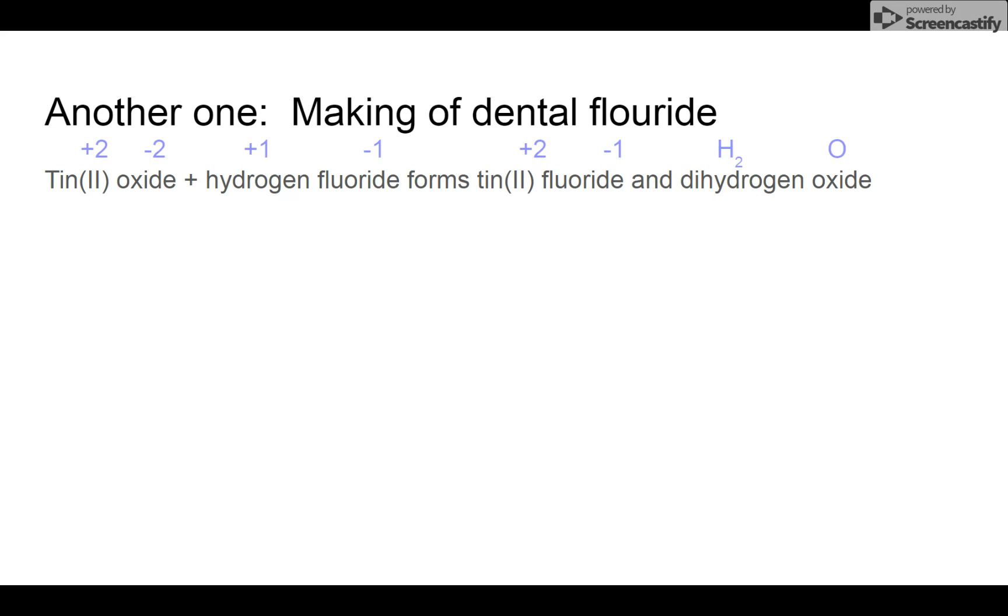Step one, find your valences. Tin 2 is telling you it's plus two. You look up oxygen, you look up hydrogen, you look up fluorine, and you don't have to look them up anymore because whatever's on the left side is going to show up on the right side.